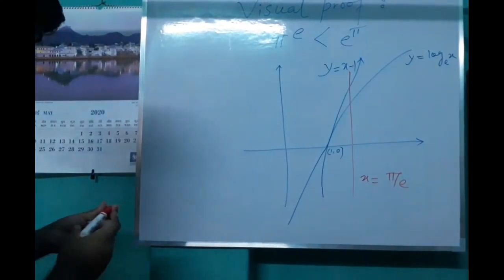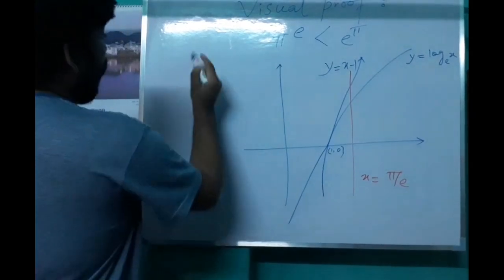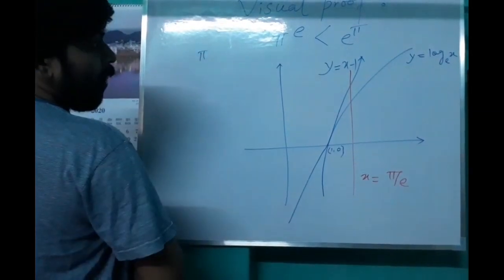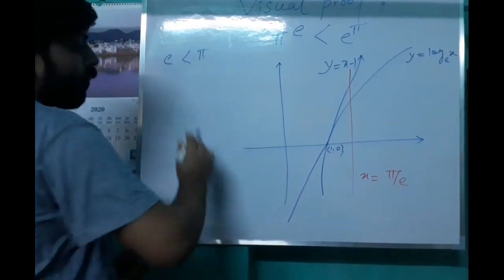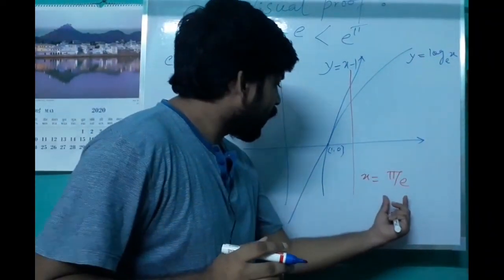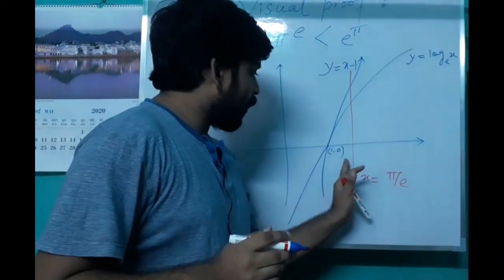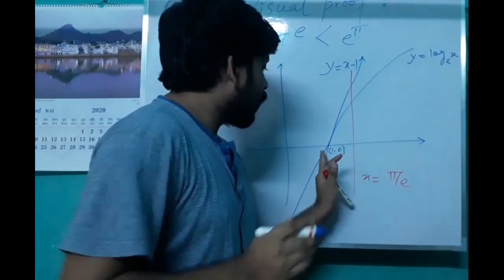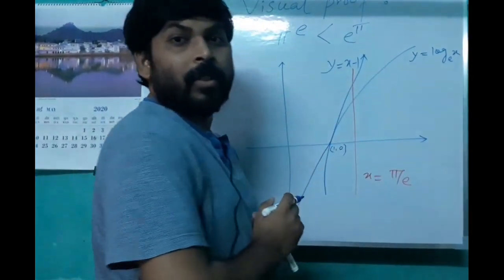Since pi is bigger than e, that quantity pi by e is bigger than 1. So this line lies just to the right of the point 1 comma 0.